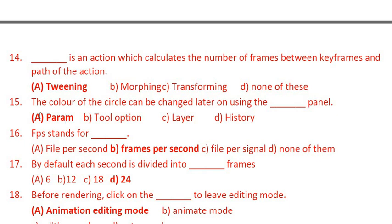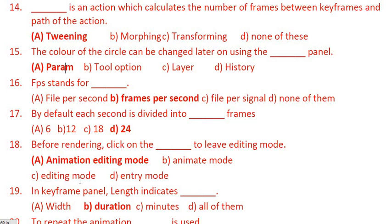Question 15: The color of a circle can be changed later on using which panel? The answer is the param panel. The param panel — parameters — is on the left-hand bottom side, where you can change the properties of an object. Question 16: FPS stands for frames per second. By default, each second is divided into 24 frames.